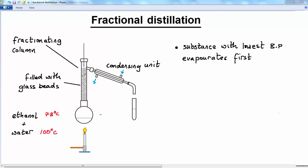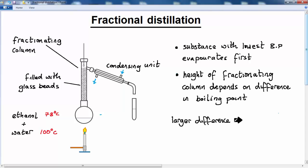Now the height of the fractionating column chosen depends upon the difference in boiling points between the two liquids present in the mixture. If this difference is very small, then you will need a higher fractionating column. If the difference is larger, then the height of the fractionating column can be less. So we can say larger difference, smaller column, smaller difference in boiling point, then higher column.